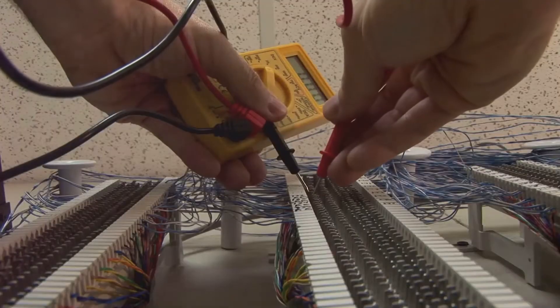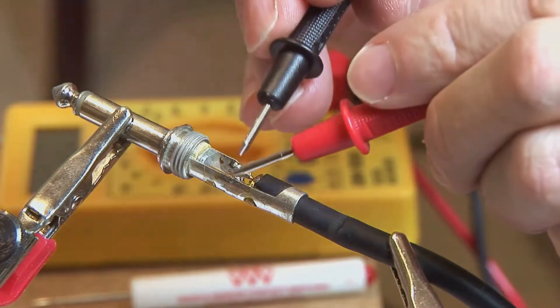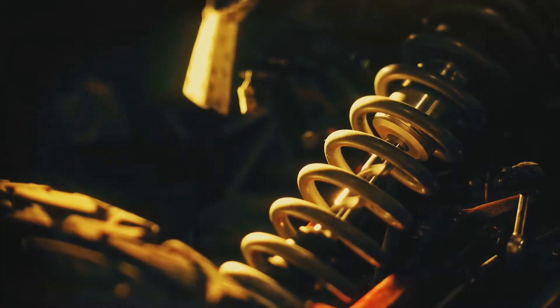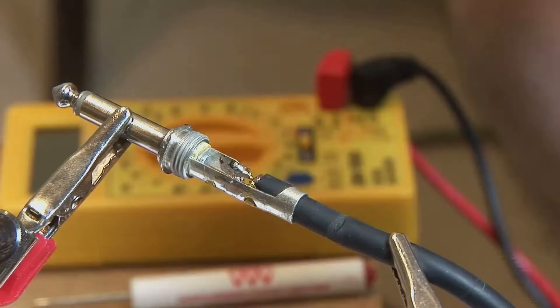Hey there DIYers, today we're getting our hands dirty with solenoids. Think of a solenoid as a little electrical muscle - it's a simple coil of wire that when juiced up with electricity creates a magnetic field. This field can push or pull a metal plunger, making things move.